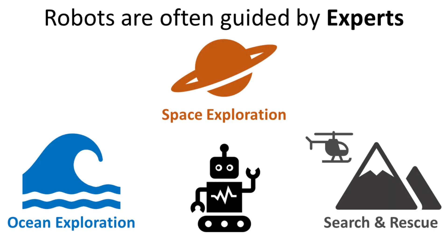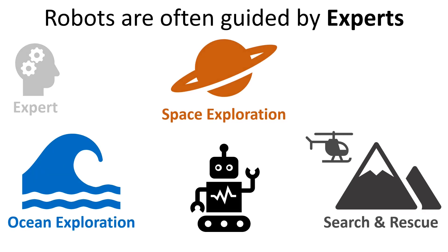Most of these applications require the expert to tell the robot where to go. The expert usually gives the robot some pre-planned route, because they don't know in advance where the most interesting observations will be, and they usually don't have the time or communications bandwidth to be able to monitor the robot constantly.